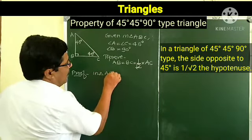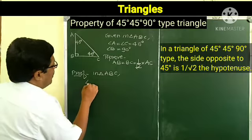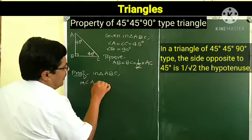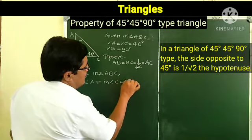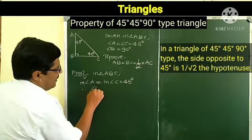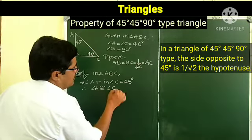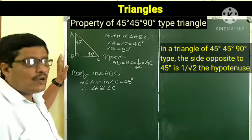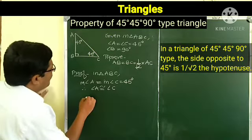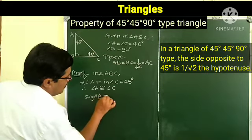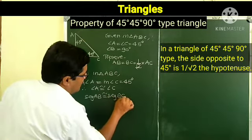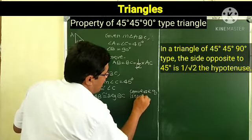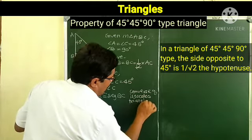In triangle ABC, measure of angle A equals measure of angle C equals 45 degrees. Therefore angle A is congruent to angle C. Since these two angles are congruent, the sides opposite to them are congruent — this is the converse of the Isosceles Triangle Theorem. Therefore segment AB is congruent to segment BC.